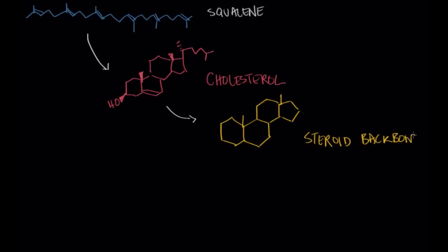And so these are the four characteristic rings of the steroid backbone. And as you can see we are a really long way off at this point from the very beginning place that we started which was that isoprene unit.